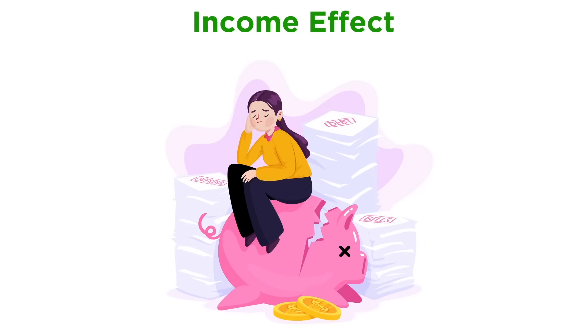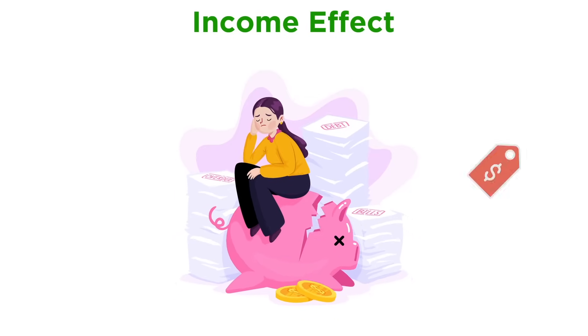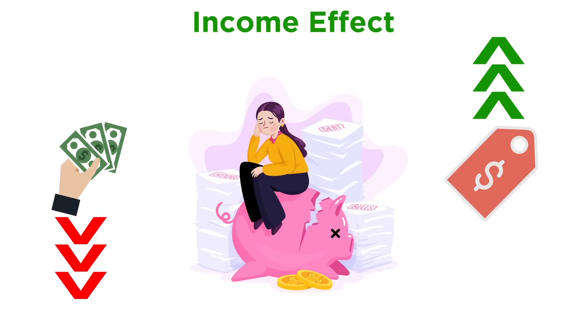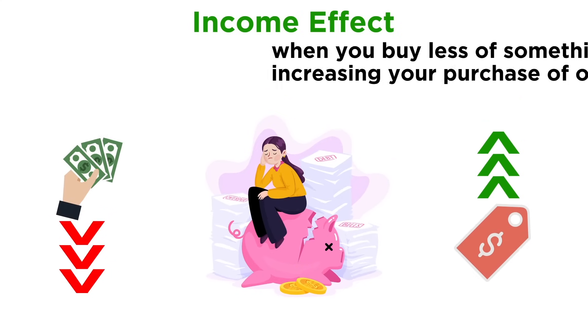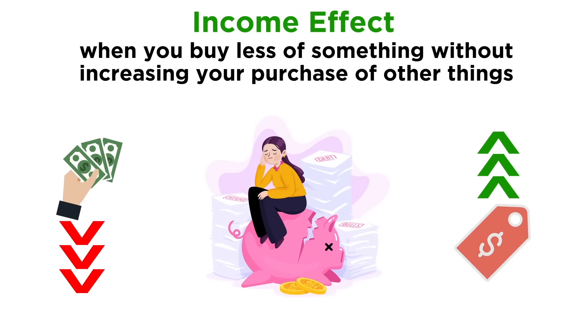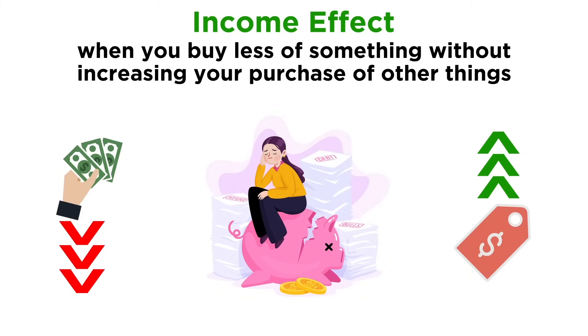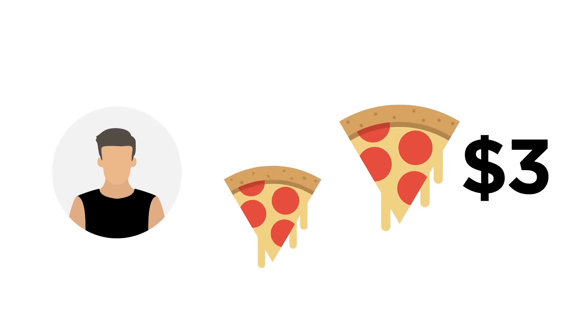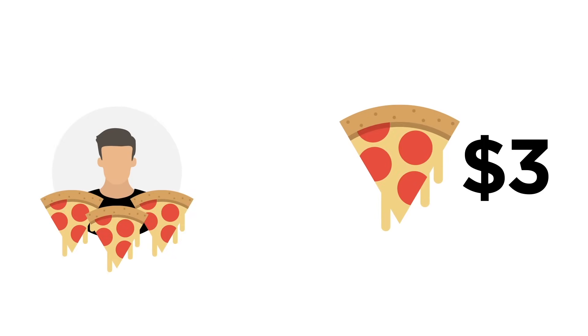Another such variable is the income effect. Rising prices make us all feel more poor. When prices rise, we cut back on what we buy if our income does not go up. When you buy less of something without increasing your purchase of other things, that is the income effect. So if the price of a slice of pizza goes from two dollars to three dollars, you might buy only three slices instead of four.